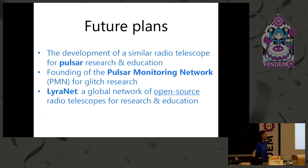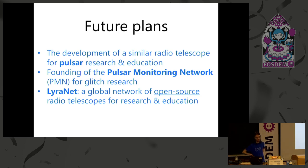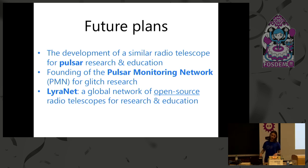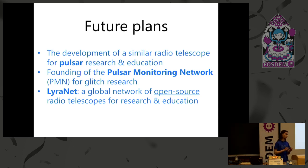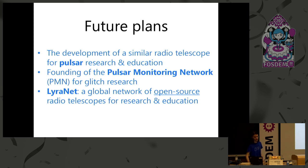Some future plans: we have a lot of plans for the future regarding radio astronomy. One of them is the development of a similar educational instrument for pulsar education, and it may be part of research as part of the Pulsar Monitoring Network, which will be dedicated for glitch research. A pulsar glitch is basically an open problem in science — it's a sudden change in the spin period of a pulsar, which is a neutron star. We're looking to research more into that. And of course we have Lyronet, which will be a global network of open source radio telescopes.